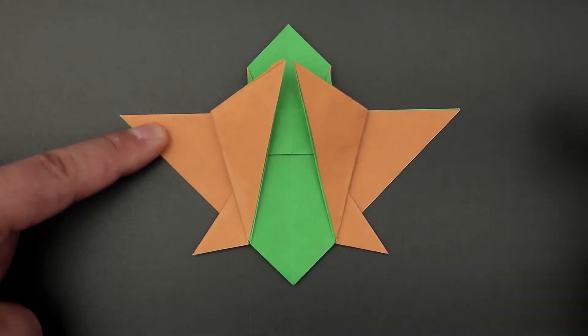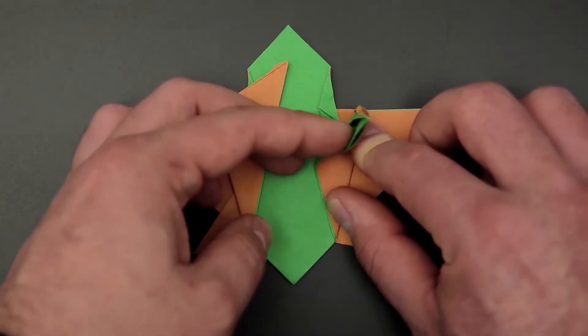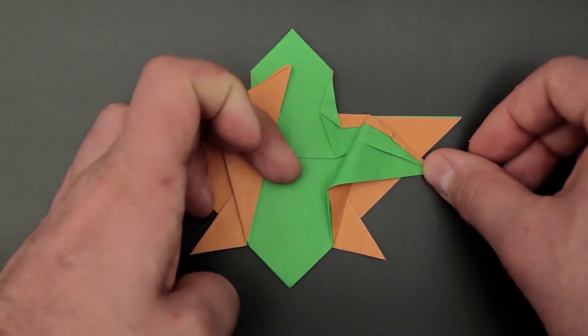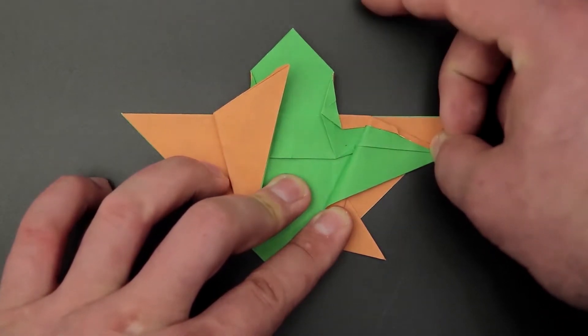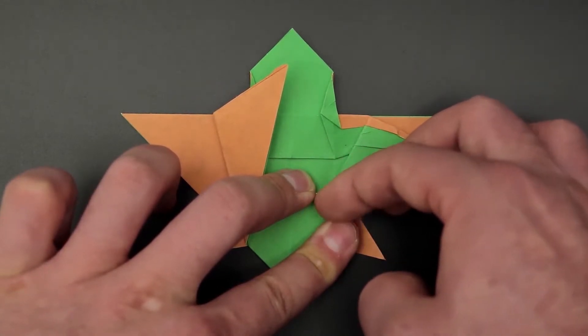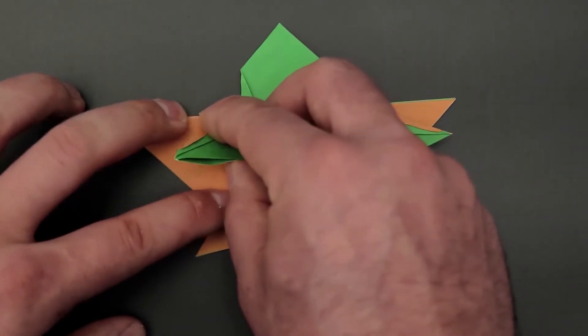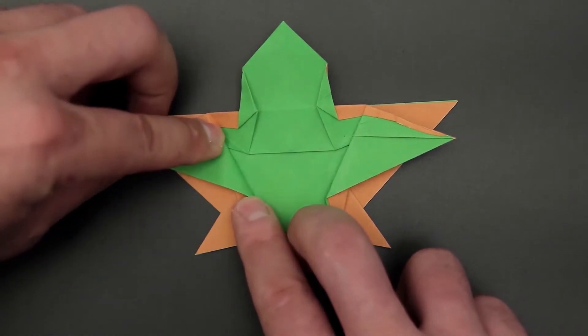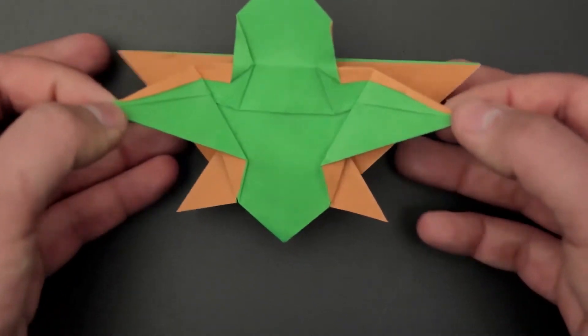And now we're going to have to bring it back, leaving a small difference. Just bring the tip back to the side, leaving this edge aligned with this point here, making this diagonal fold. This is more or less the result. Let's go to the left side. Do the exact same thing. And for now this part is ready. Let's turn it over.